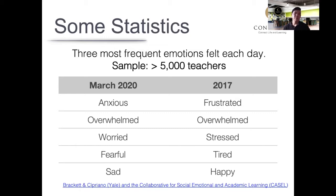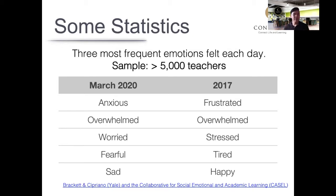In the leftmost column — the survey responses shortly after the COVID-19 pandemic — you can see that in March 2020 the three most frequently reported emotions teachers felt each day included anxiousness, being overwhelmed, worried, fearful, and sad. The adjacent column from 2017 shows five other emotions teachers frequently reported feeling each day, three years before the COVID-19 outbreak. I'll give you a moment to reflect on the differences between the two columns.